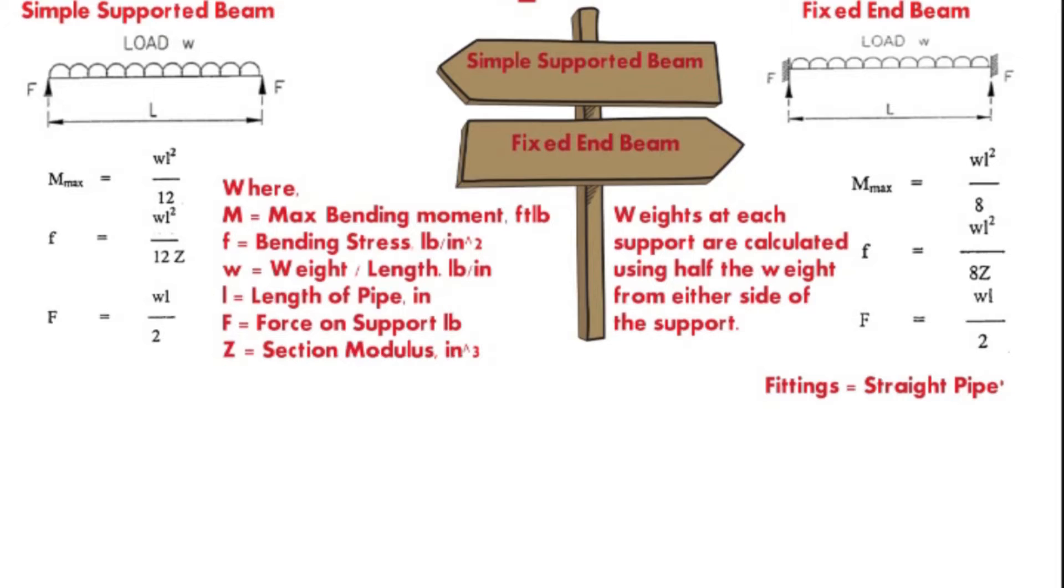For either case, support load remains the same. However, depending upon the model chosen, the support span and the stress in the pipe varies. In actual practice, the pipe at the point of support is not free to rotate fully since it is partially restrained through its attachment to the pipe segment beyond the support.